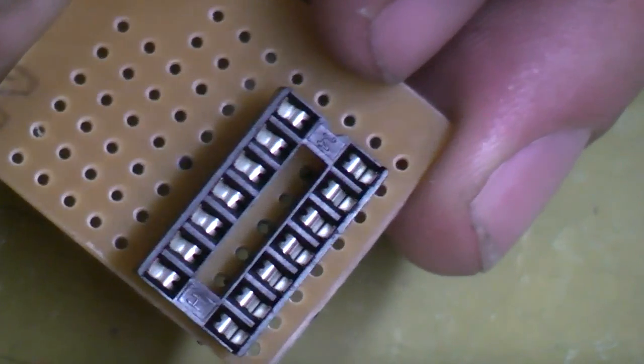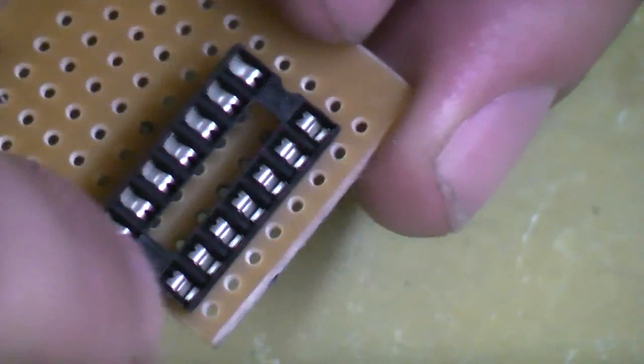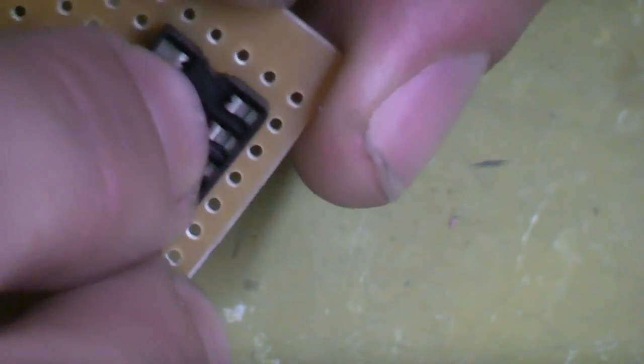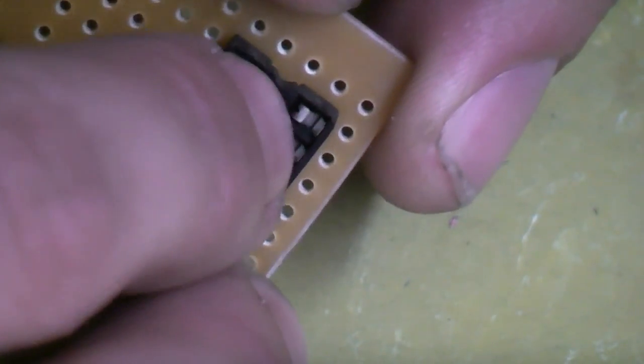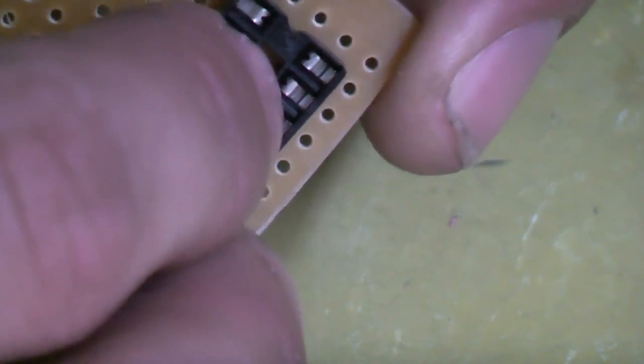And the orientation is quite important. With the sockets you'll see that up the top there's a sort of wee divot in there and that indicates where pin 1 is going to be. So make sure that's facing the right way.